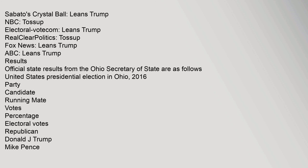Pre-election polling and forecasts: Sabato's Crystal Ball rated Ohio as Leans Trump. NBC rated it a Toss-Up. Electoral Vote.com rated it Leans Trump. RealClear Politics rated it a Toss-Up. Fox News rated it Leans Trump. ABC rated it Leans Trump.